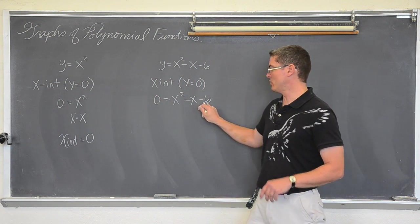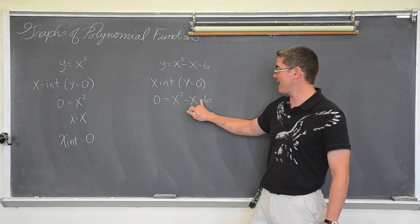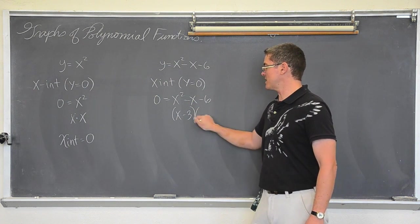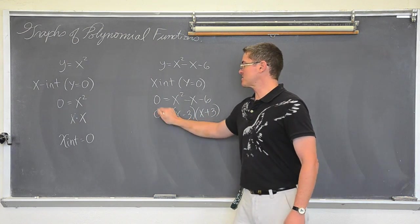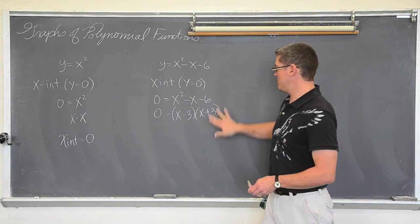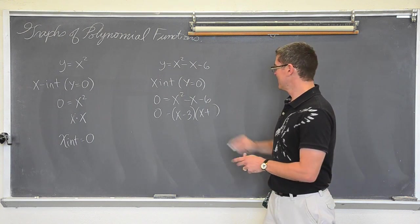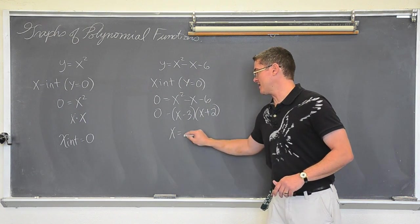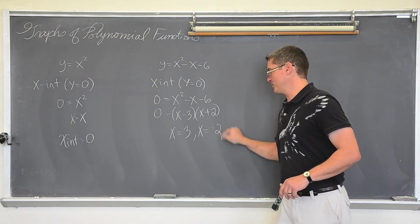Here, this is factorable. What are factors of six that subtract to give you the middle term? That is going to be x minus three times x plus two. Now that this is factored, I can go ahead and solve this and set each one of these factors equal to zero and get x equals three and x equals negative two.